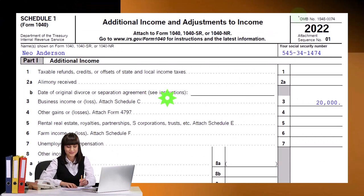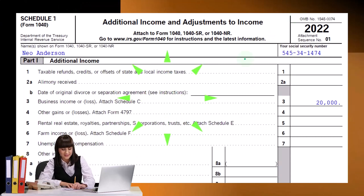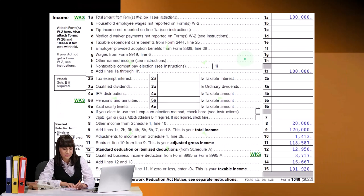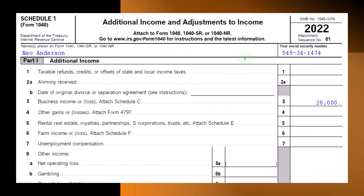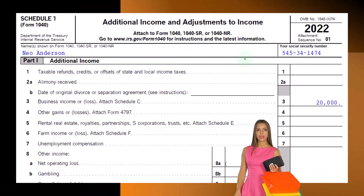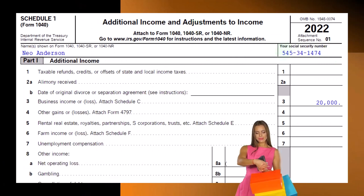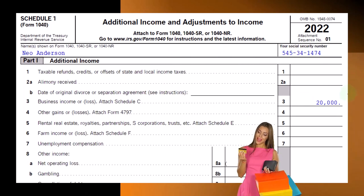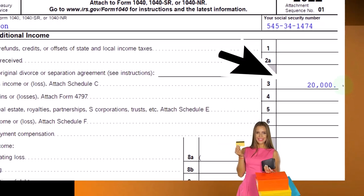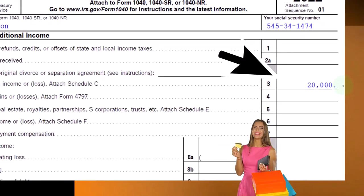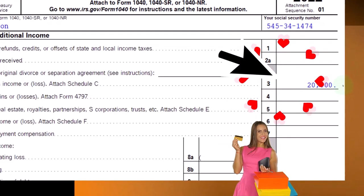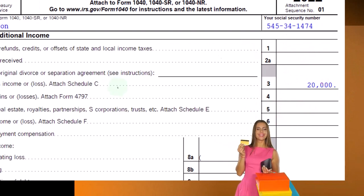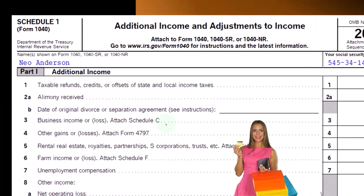Looking at Schedule 1, the business income is going to be pulling in right here. Notice that the business income — my cursor is right there — the $20,000. Notice that this is pulling in from a Schedule C.